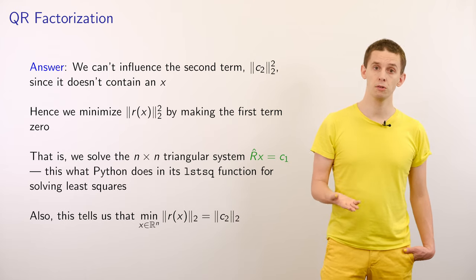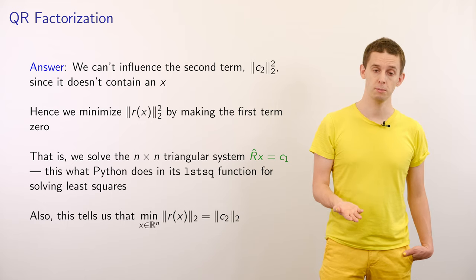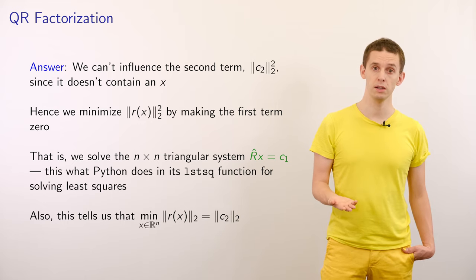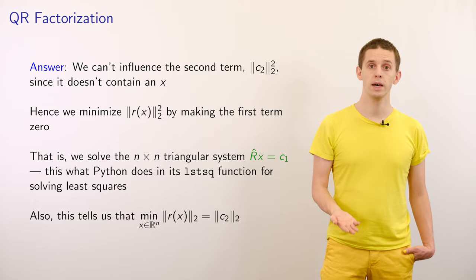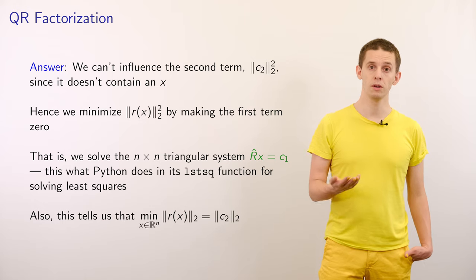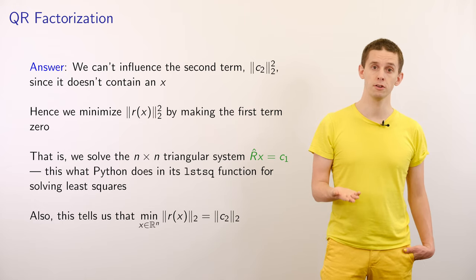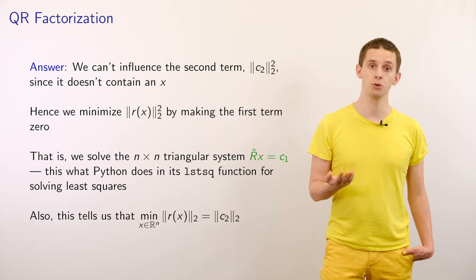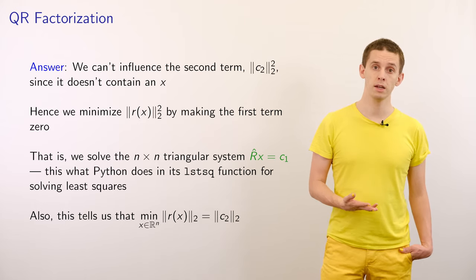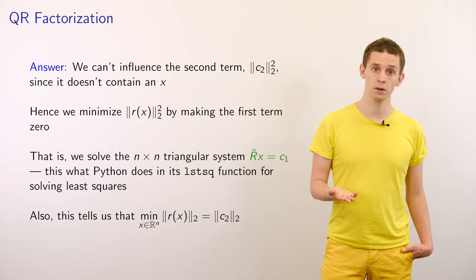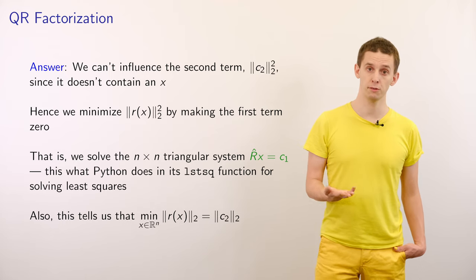If we now solve this n by n triangular system, R hat of X is equal to C1, then that will give us the solution to this linear least squares problem. In unit one, we looked at the LSTSQ function in Python, and we discussed how this was a good way to solve linear least squares problems. Indeed, the way that this algorithm is actually working is via doing this QR factorization.